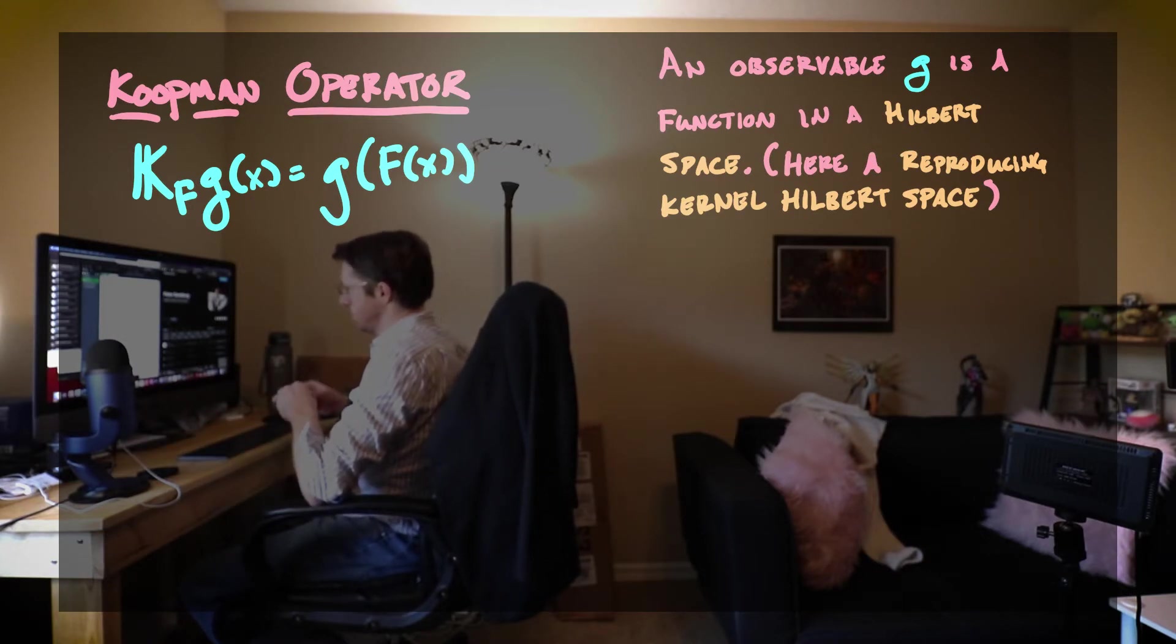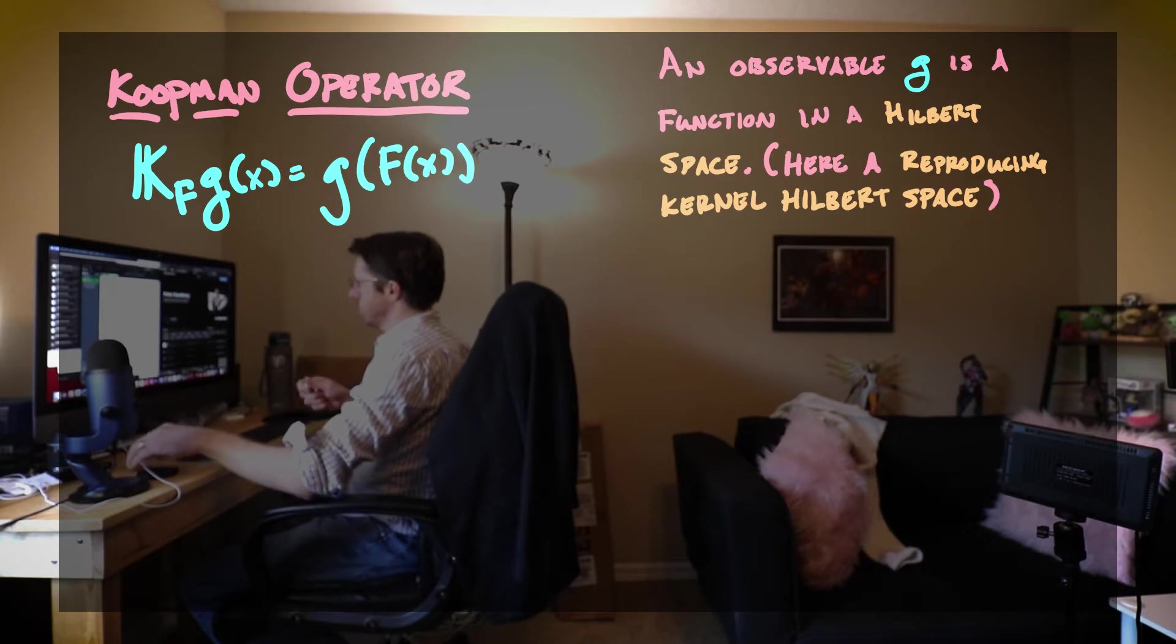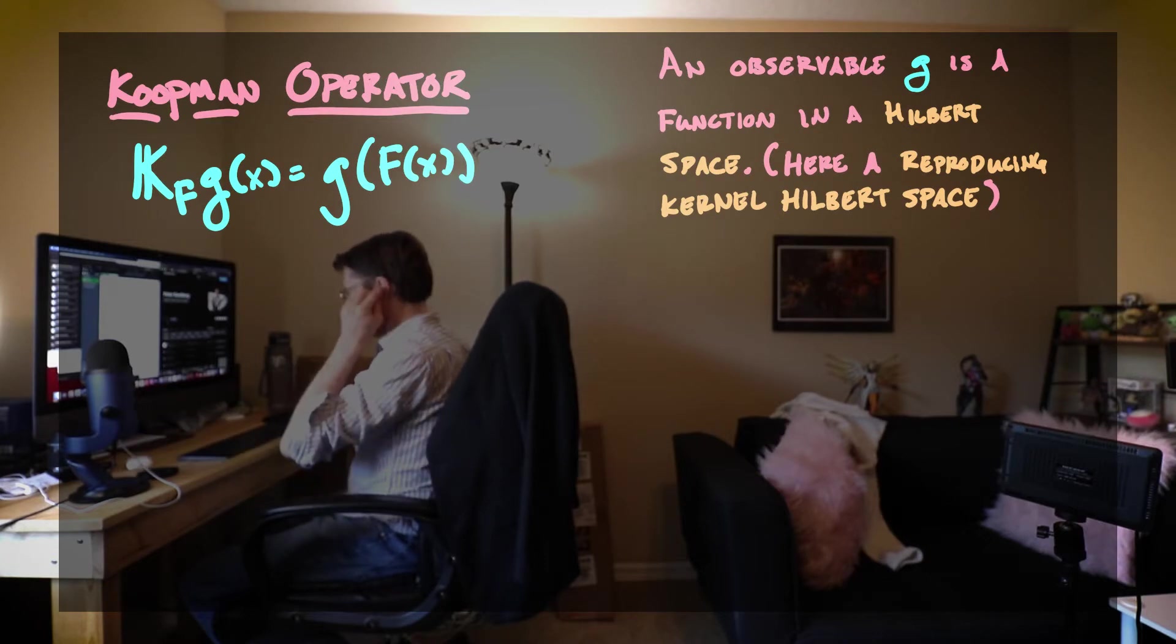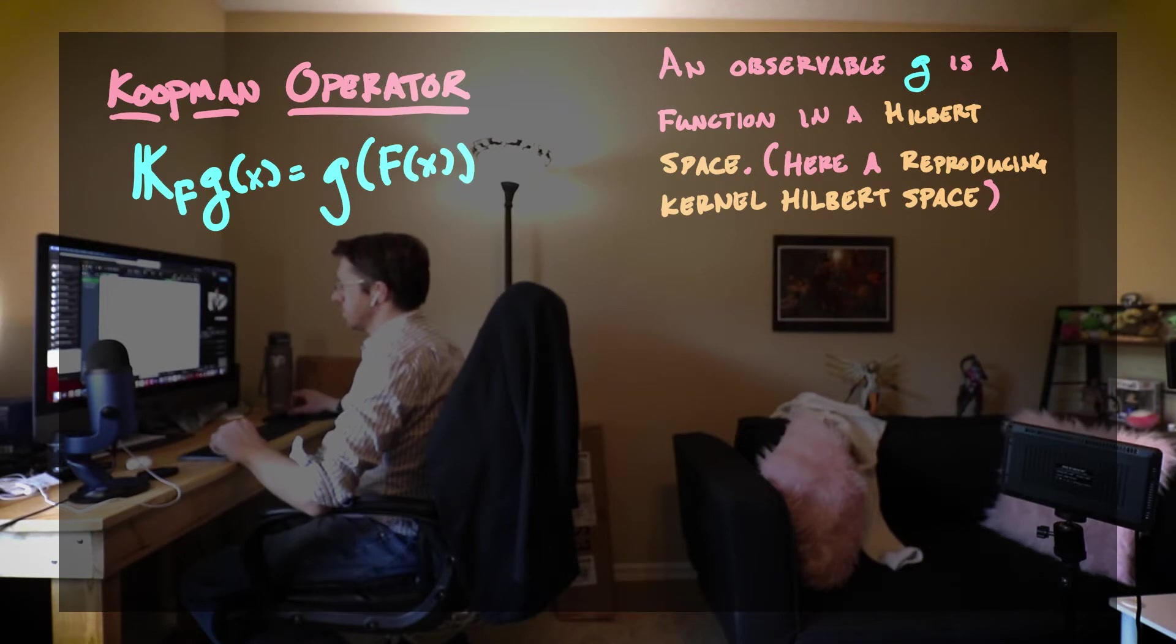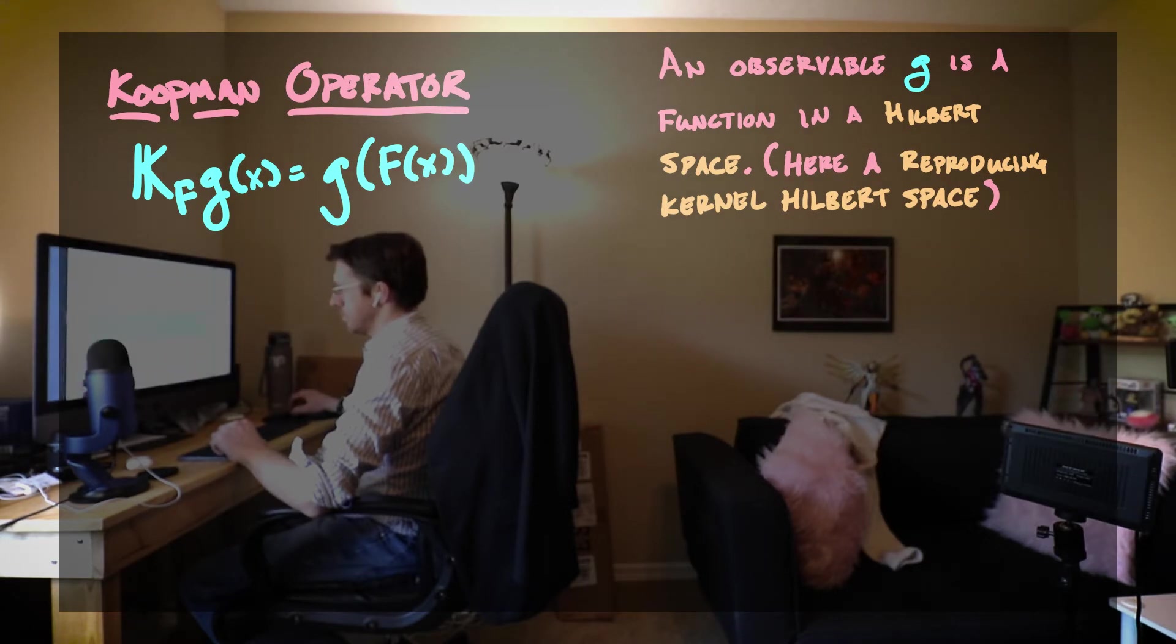So the Koopman operator on this space of observables is the operator that takes our dynamics and it puts it inside of an observable. If we take a look at the Koopman operator acting on an observable g, then the result is g composed with our discrete time dynamics.